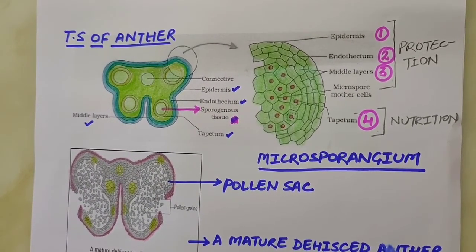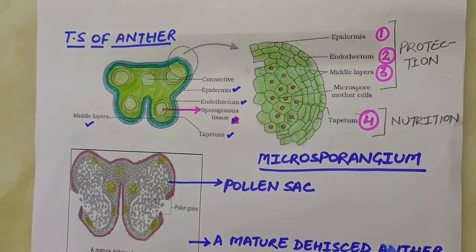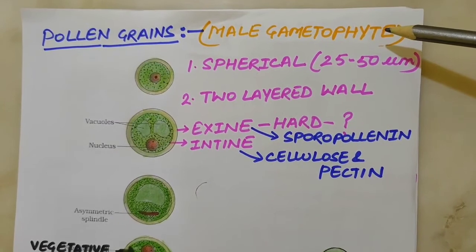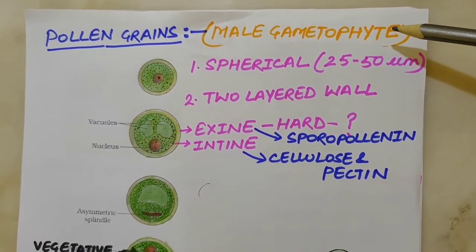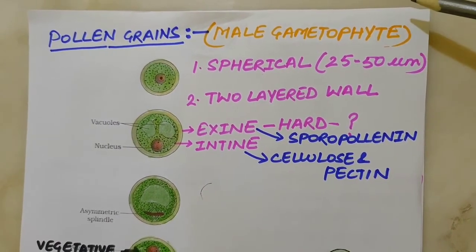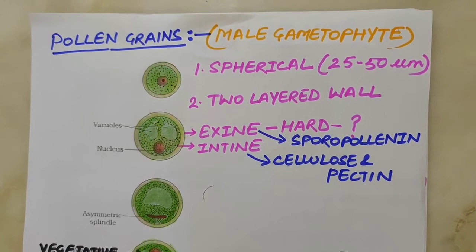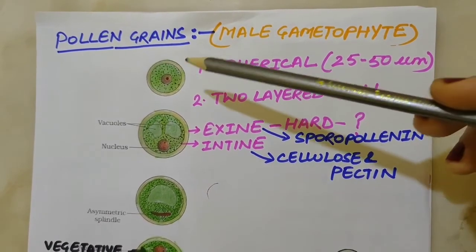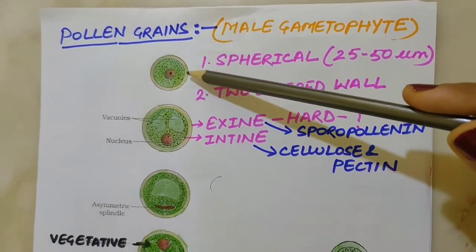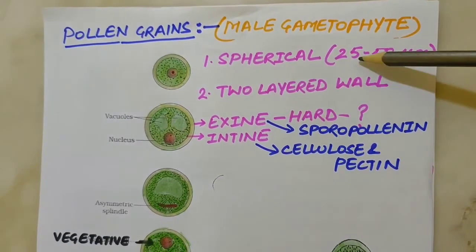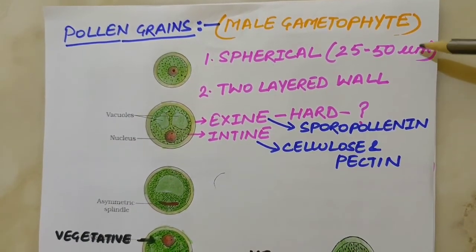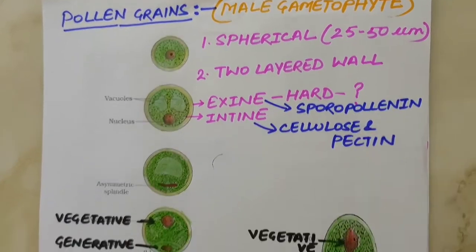Now in this video, we will discuss the structure of pollen grains. Pollen grains represent the male gametophyte. You might have seen the deposition of yellowish powdery mass on flowers — it is actually pollen grains. If we look at the structure of the pollen grain, they are generally spherical, about 25 to 50 micrometers in diameter. They have a prominent two-layered wall. The hard outer layer is called exine and it is made up of sporopollenin.